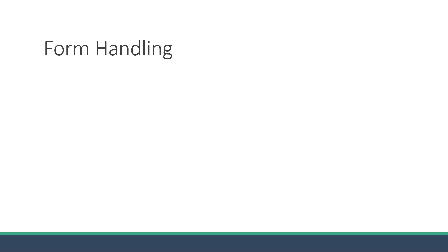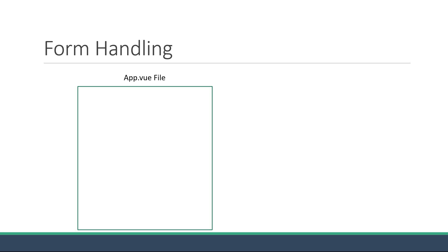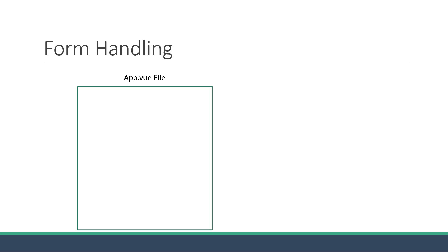We know that each portion of the user interface is represented by a single .vue file, for example app.vue. We also know that each Vue file contains a template block and a script block. It can optionally contain a style block but we can ignore that for now. When we talk about form handling, we generally refer to the process of capturing data from the user, which we can later process depending on the business requirements. In a Vue file, the form controls are present in the template block, whereas the corresponding data resides in the script block.